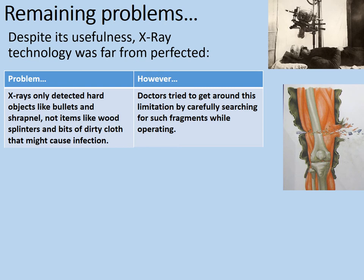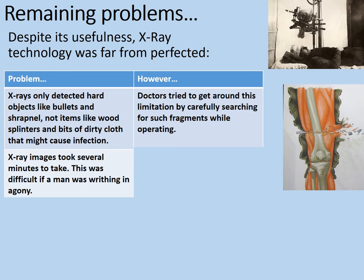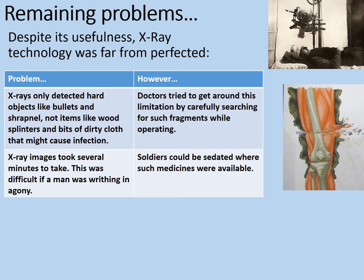Another problem was that x-ray images took several minutes to take. This was difficult if a man was writhing in agony and moving around, because the images would be blurred. However, soldiers could be sedated where such medicines were available — perhaps with an anaesthetic.